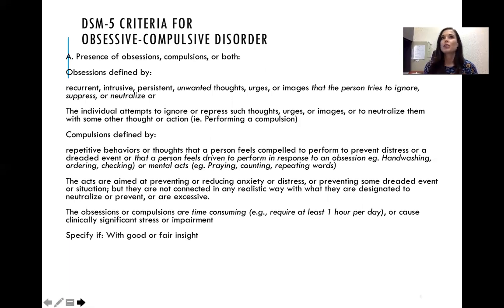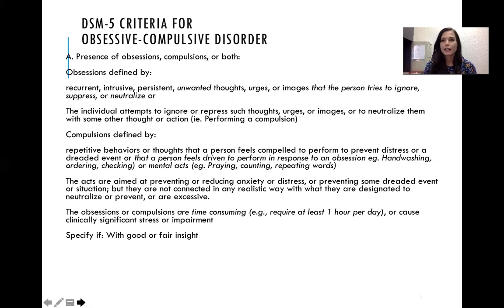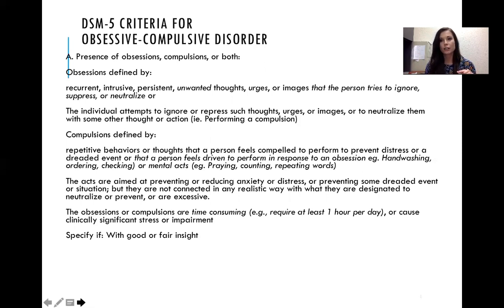For example, turning the lights off and on 30 times is not going to keep someone safe from getting hit by a car — that's what it means by the ritual not being connected in reality to the event. Or it's excessive — perhaps there's an obsession about neatly ironed clothing, so a person irons all their clothes, then finds one crease in one shirt and has to re-iron all of them.